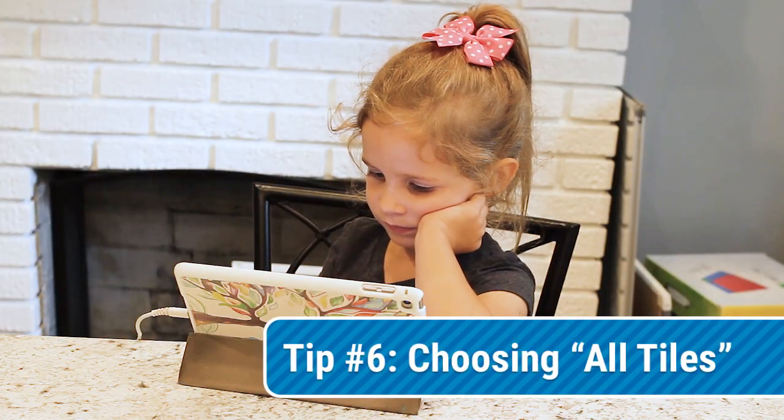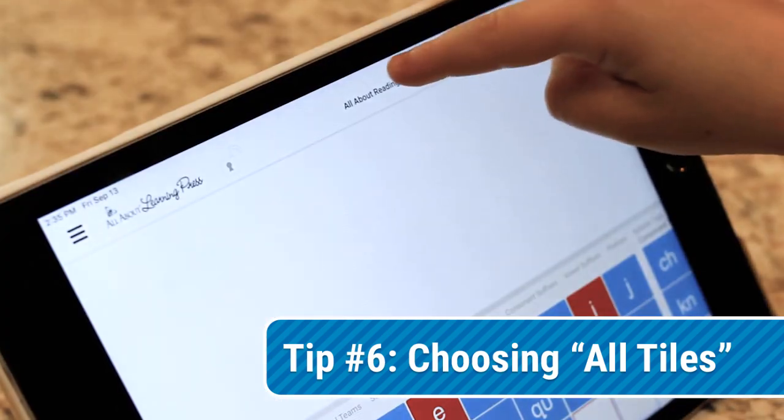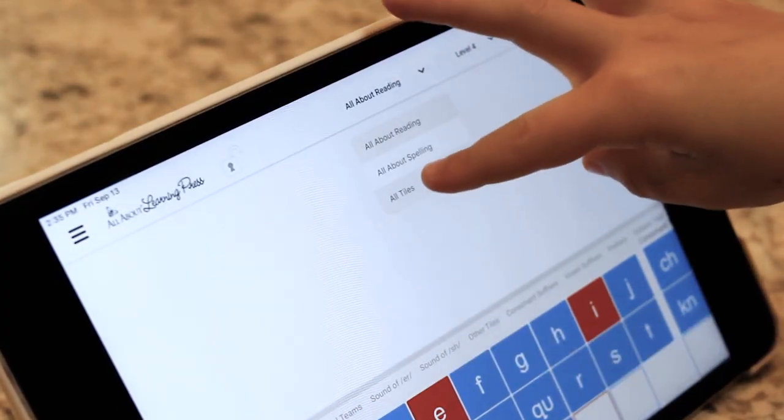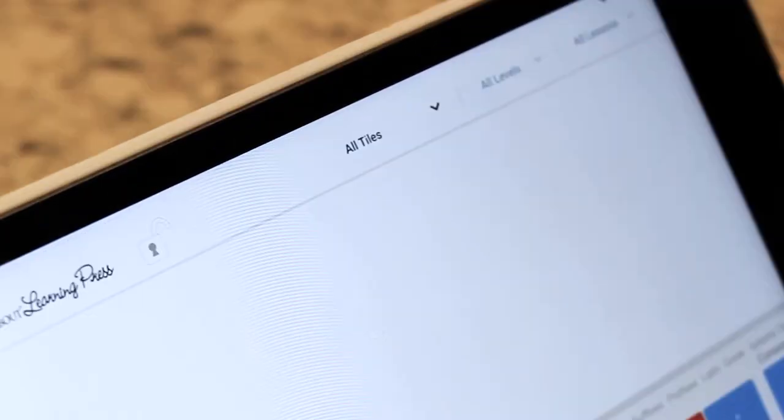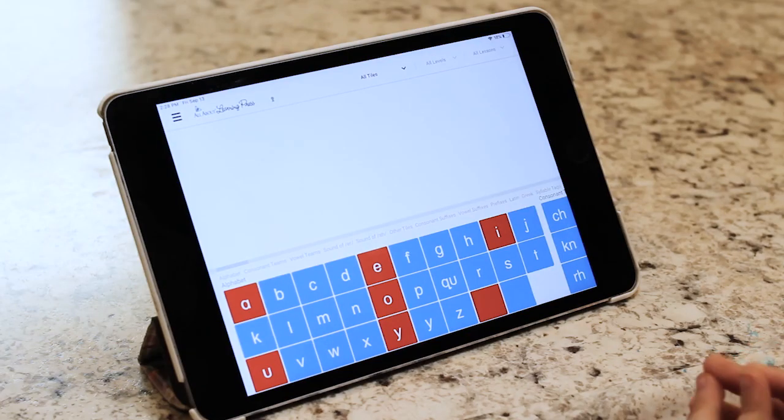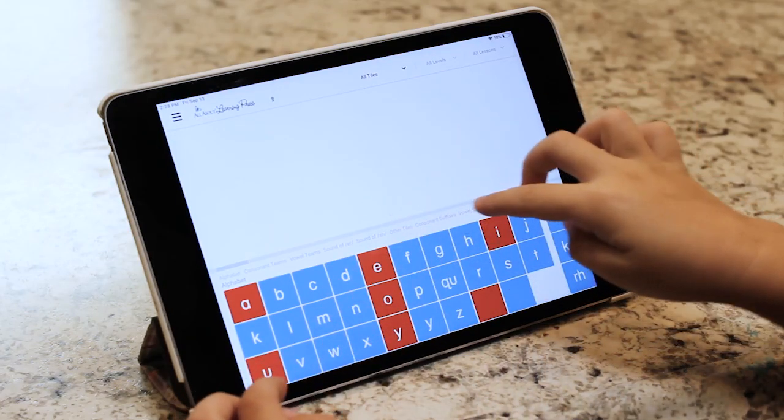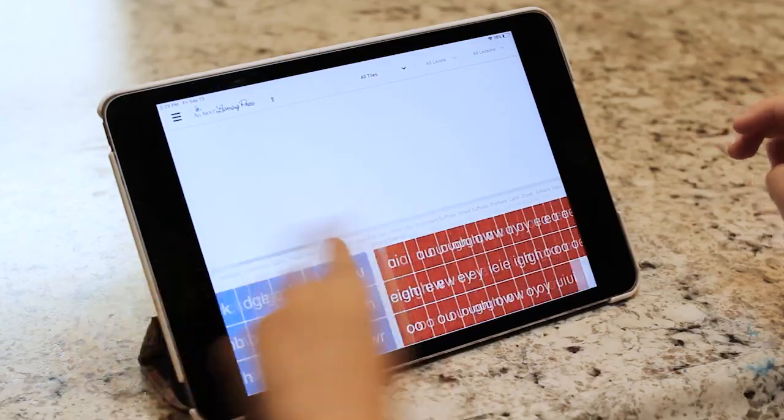In the drop-down menu in the upper right, you can either choose All About Reading, All About Spelling, or All Tiles. If you choose All Tiles, you have the option of having all tiles available from both programs in the storage area.